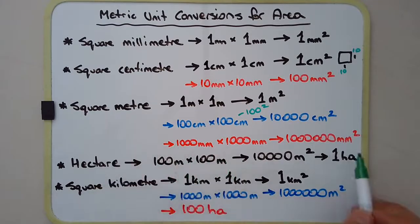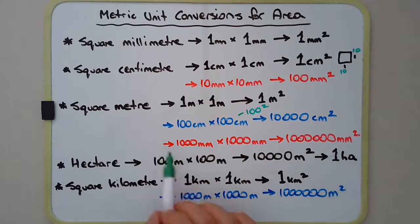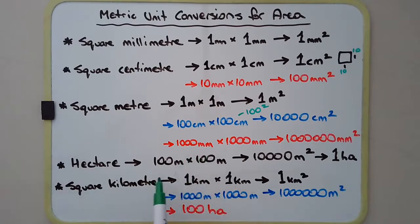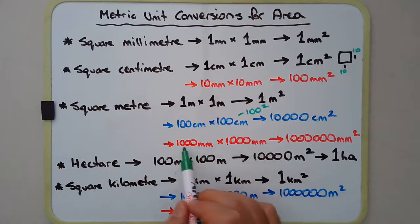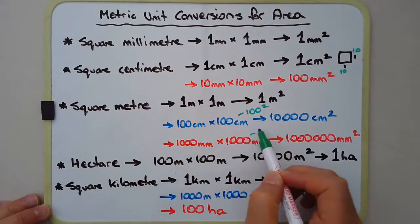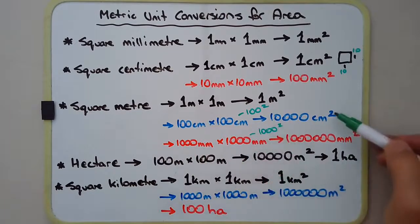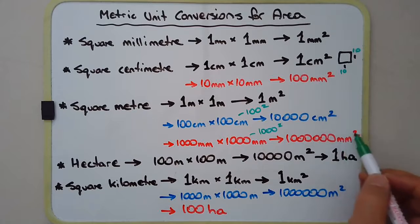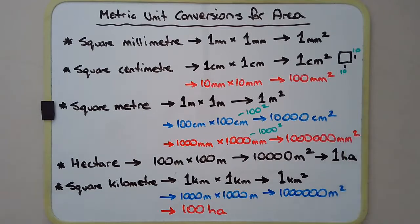A square metre can also be converted into square millimetres. A metre is 1,000 millimetres — from metric unit conversion for length, 'milli' means 1,000. But we're going to multiply by 1,000 times 1,000, that's just 1,000 squared. You can see the relationship: the unit of length has a superscript 2, meaning we're talking about an area — a square shape, not just a length.